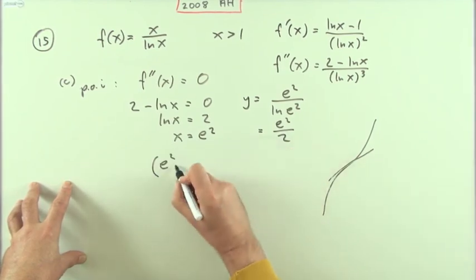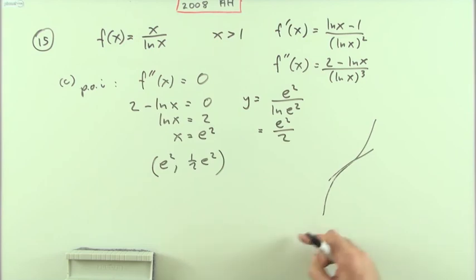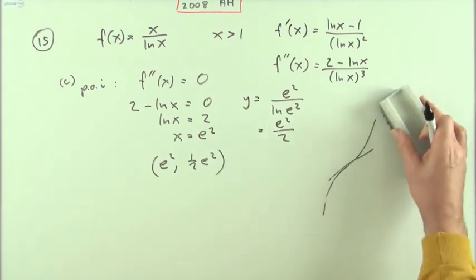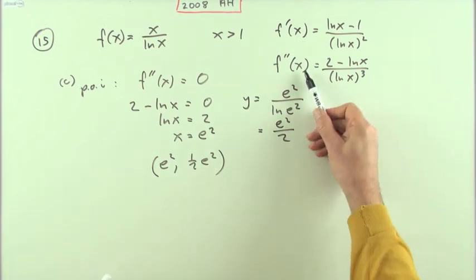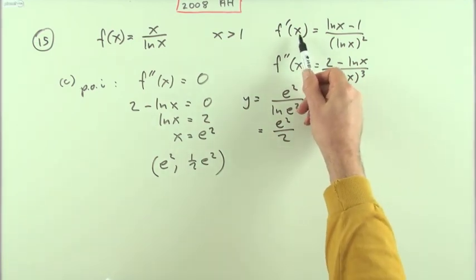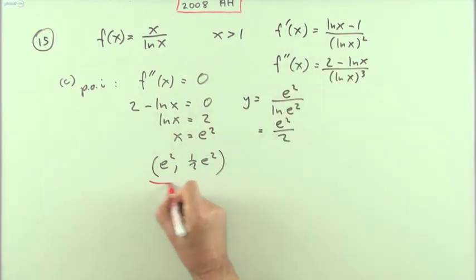E squared, and I'll just write that as a half e squared. It didn't ask for the nature of that point of inflection, whether it was rising or falling. In order to do that, we'd either have had to find a value before or put numbers into f dash x to get its gradient there. There's the point of inflection.